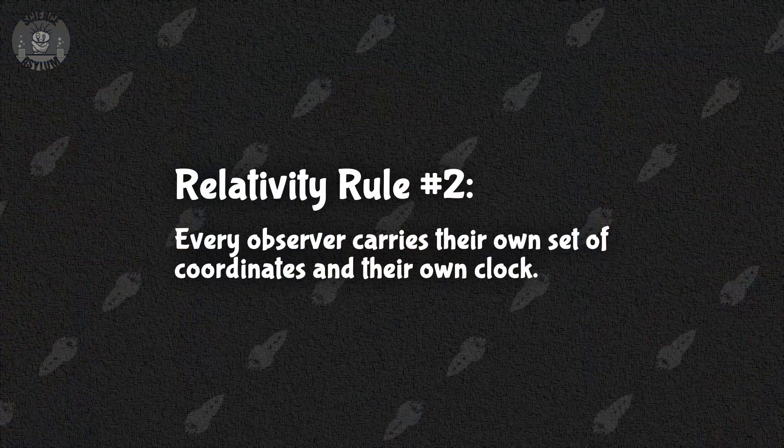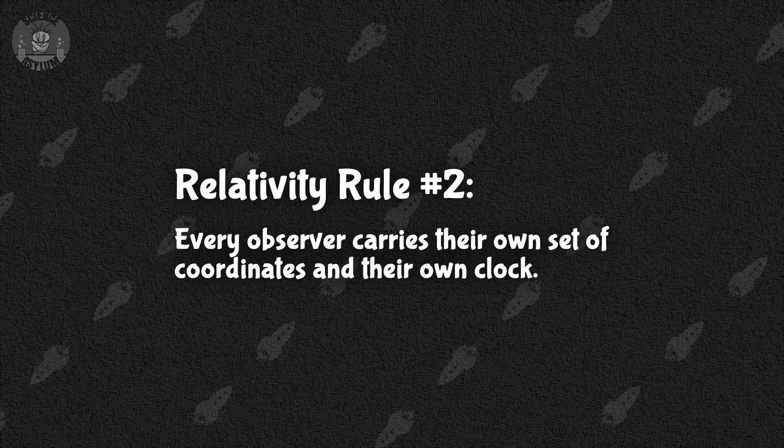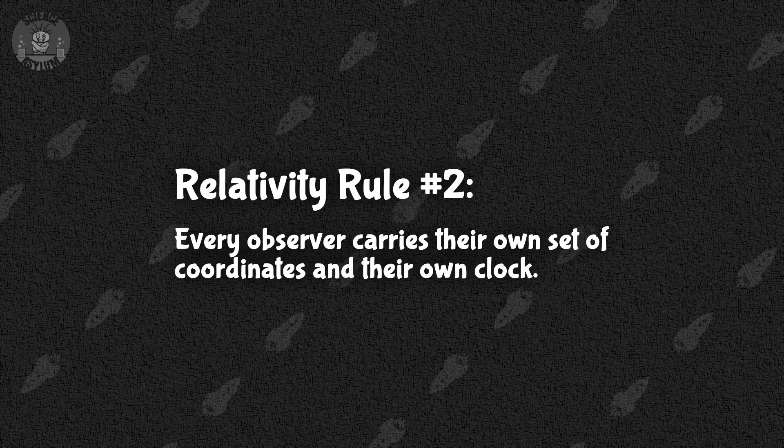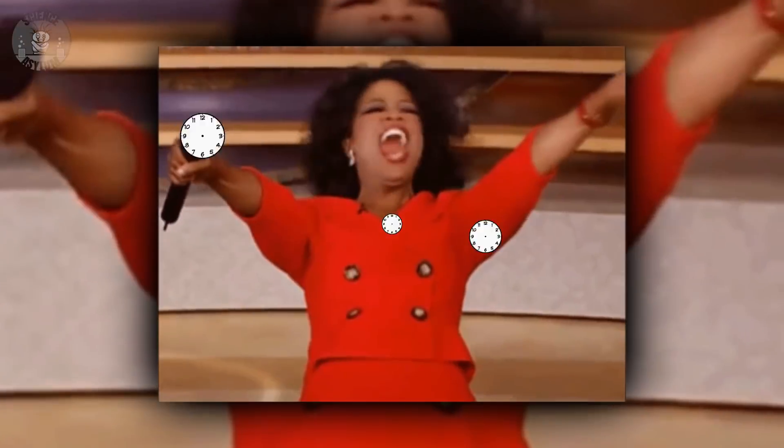If you're even remotely familiar with relativity, this isn't that surprising. Rule number two for relativity says, Every observer carries their own set of coordinates and their own clock. I get a clock. You get a clock. Everybody gets a clock! Different observers traveling different paths through space-time are going to measure different amounts of time. There's no paradox there.